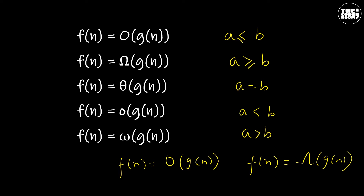One property of real numbers, however, does not carry over to asymptotic notation — that is trichotomy. For any two real numbers a and b, exactly one of the following must hold: a less than b, a equals b, or a greater than b. Although any two real numbers can be compared, not all functions are asymptotically comparable. That is, for two functions f(n) and g(n), it may be the case that neither the Big O nor the Big Omega notation holds.